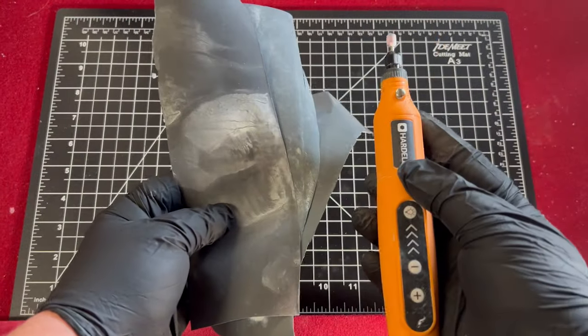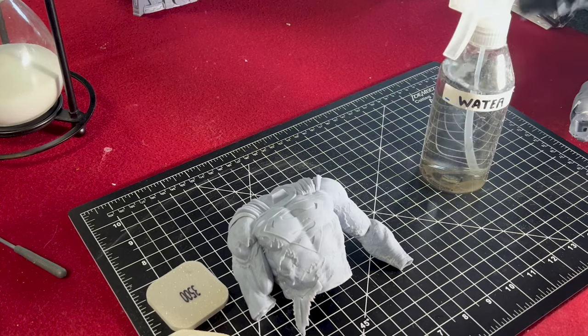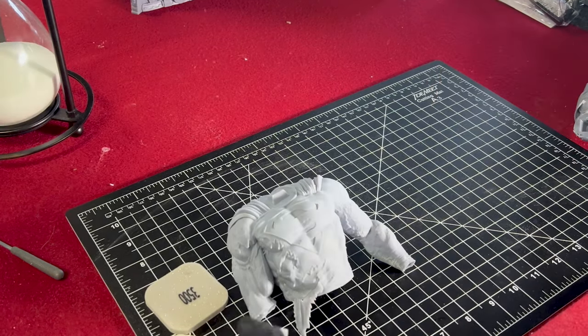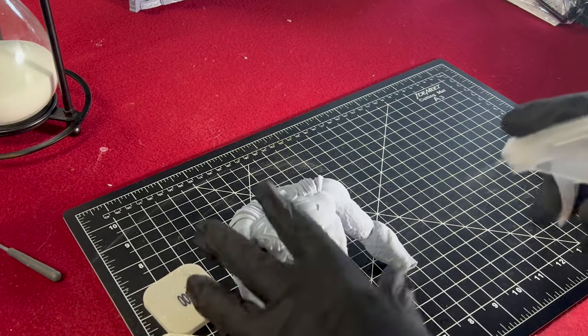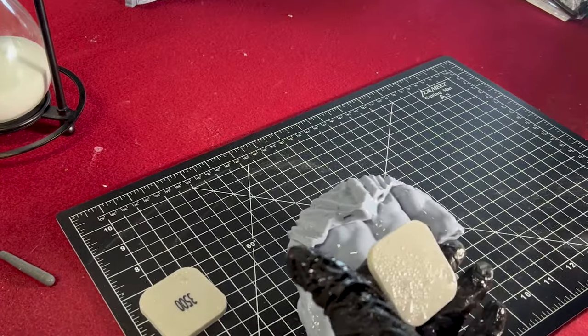Whether you are using a Dremel like this or traditional sandpaper, I would recommend using a process of wet sanding to keep the plastic particles from floating around in the air. Just spray a couple spritz of water onto the model and whatever sandpaper you're using and repeat this process every few minutes or as needed.